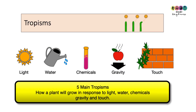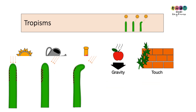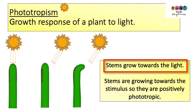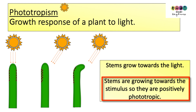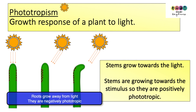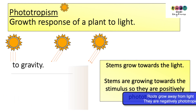The main tropisms are how a plant grows in response to light, water, chemicals, gravity, and touch. Phototropism is defined as the growth response of a plant to light. Stems grow towards the light, so they're positively phototropic, but roots grow away, so they're negatively phototropic.